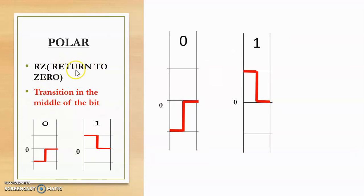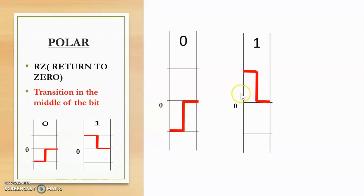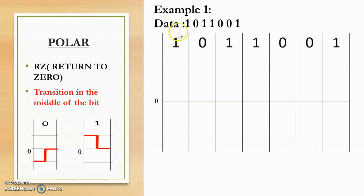RZ stands for Return to Zero, and there is a transition in the middle of the bit. In RZ, a bit zero is represented in a form that looks like an opposite Z on the negative side, and a bit one is represented in a form that looks like a Z on the positive side. For example, given digital data 1011001, we need to convert it into a digital signal using RZ line coding.